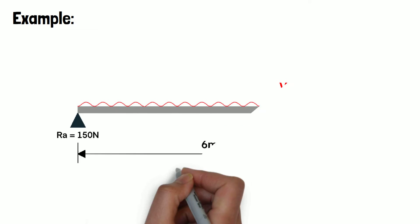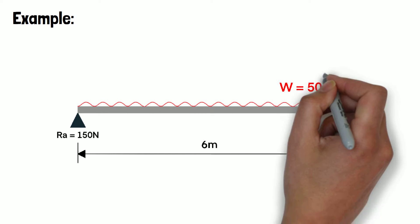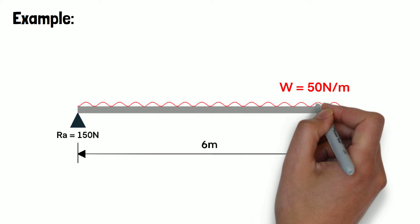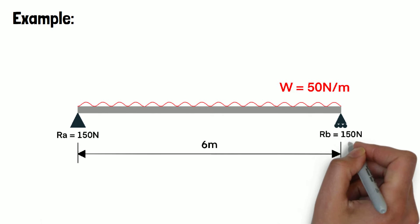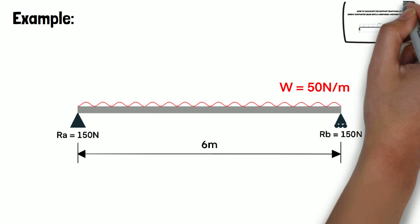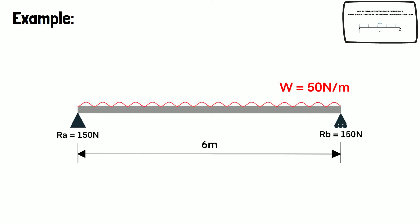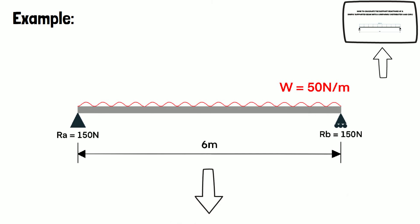Now let's work through an example of how to draw the shear force and bending moment diagrams for a beam with a UDL. The beam is six meters in length and has a uniformly distributed load W of 50 newtons per meter applied across the whole length. The beam has supports at either end denoted RA and RB. Because of the symmetry of the arrangement, RA and RB are both equal to 150 newtons. If you need help calculating these, please watch our video on how to calculate the support reactions of a beam with a uniformly distributed load.